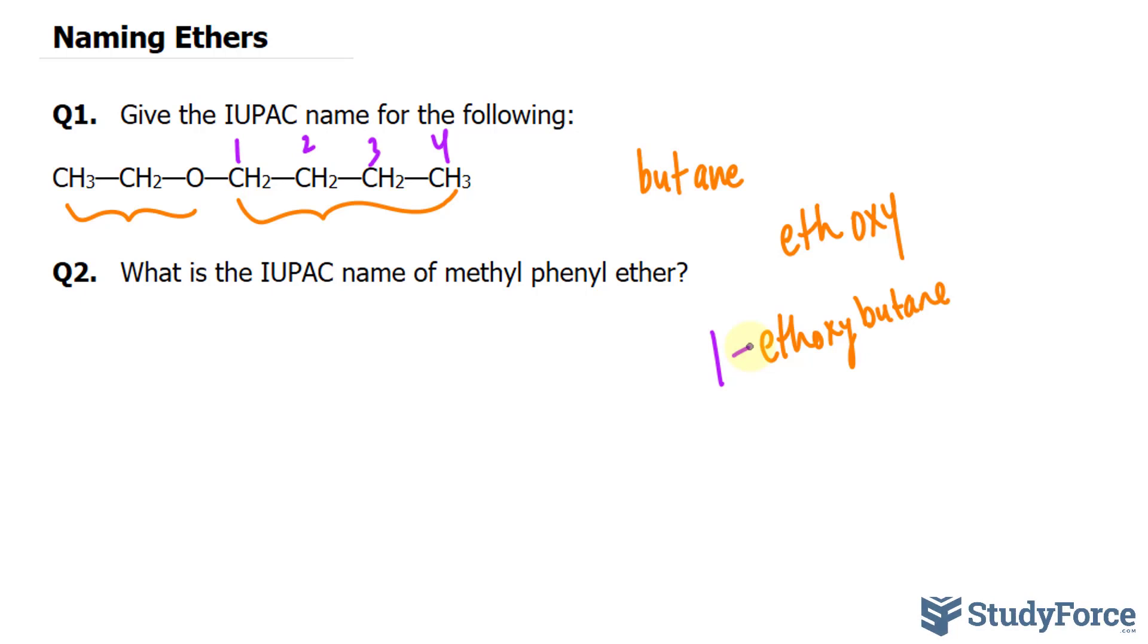Now, we have to find the IUPAC name for methyl phenol ether. This is most likely a common name for a chemical, but we have to write the IUPAC name for it. To break this down, all ether molecules have the following structure where we have the rest of the group connected to an oxygen, and that's connected to the rest of the molecule.